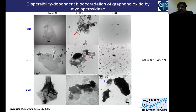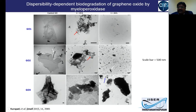Under transmission electron microscopy, GO1 and GO2 showed no sheets remaining after 24 hours — only small fragments — and the vials became colorless. GO3 showed thick sheets persisting even after 24 hours. This clearly demonstrates that colloidal stability — dispersibility in aqueous media — plays a key role in whether myeloperoxidase can degrade graphene oxide materials.